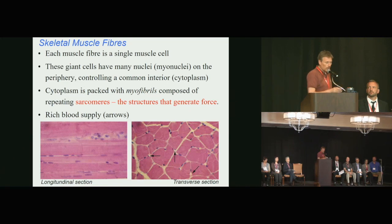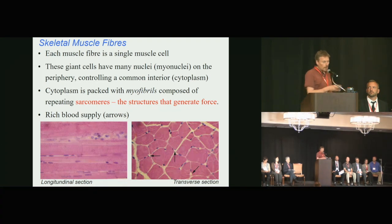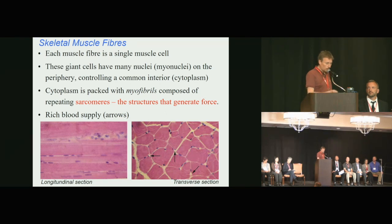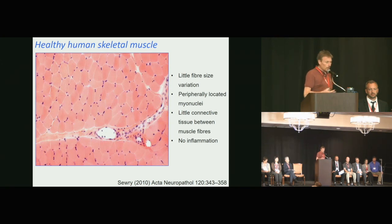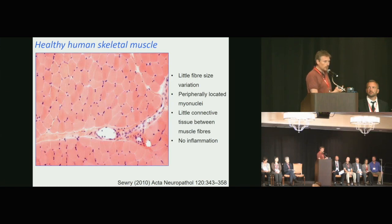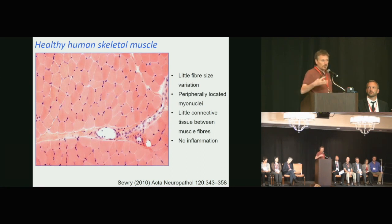Looking across the muscle fibers — if you think of a muscle fiber as a tube, one view is along the tube, the other is cutting across so the tubes come toward you. You see the pink muscle fibers with blue dots on the edge — those are the myonuclei. In healthy human muscle, fibers are regular in size, nuclei are on the edge, fibers are closely packed, with connective tissue between fascicles where blood vessels and nerves run.